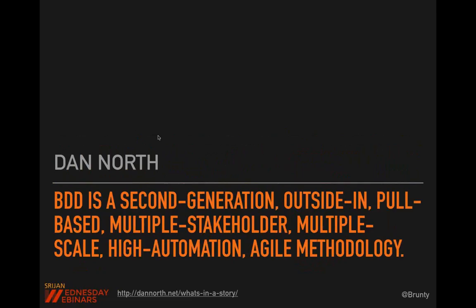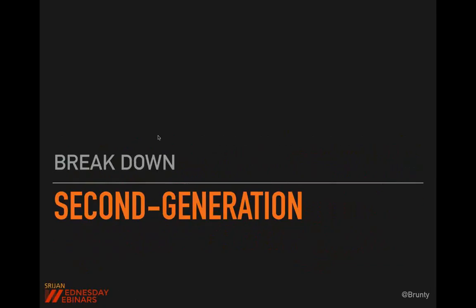Here's a quote from Dan North, the guy who came up with BDD. He considers BDD to be a second-generation, outside-in, pull-based, multiple-stakeholder, multiple-scale, high-automation agile methodology. It's considered second-generation because it didn't try to replace test-driven development — it was born from it. It took the things we learned with TDD and built upon them, improving them and saying we can do this a little bit better in these other ways.